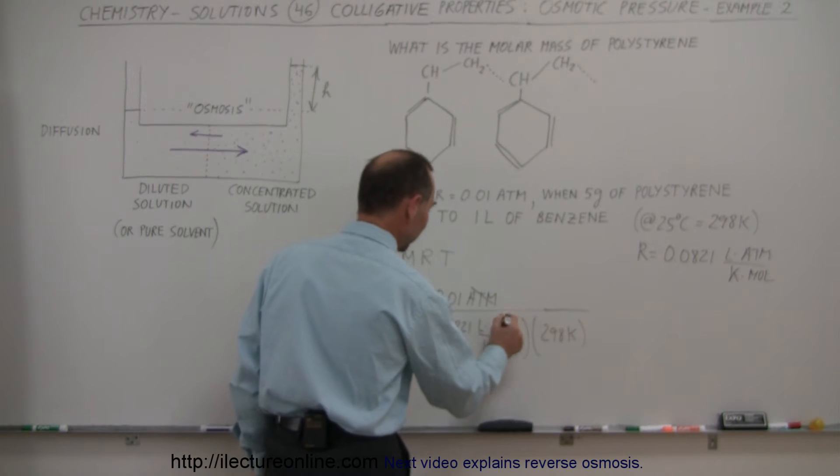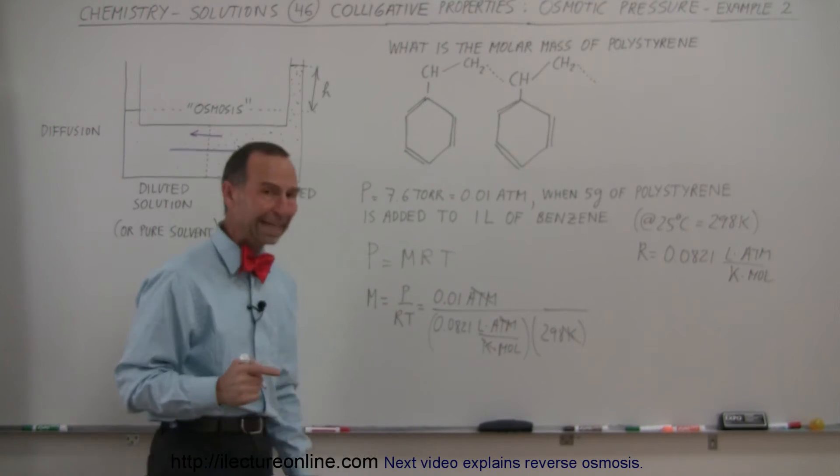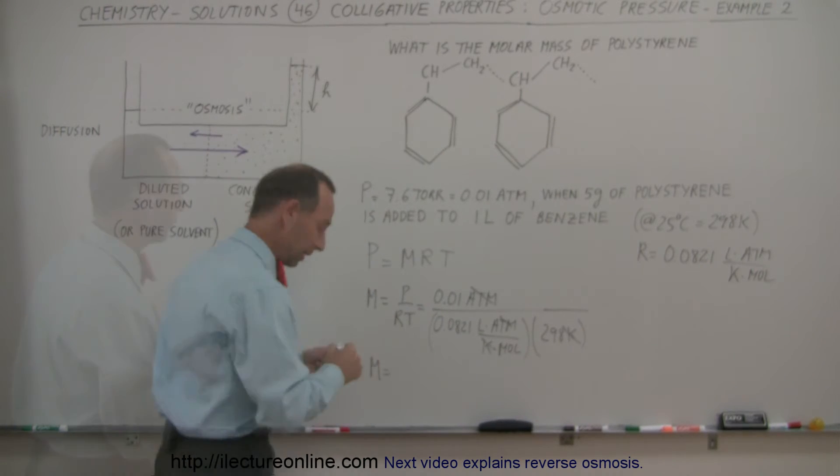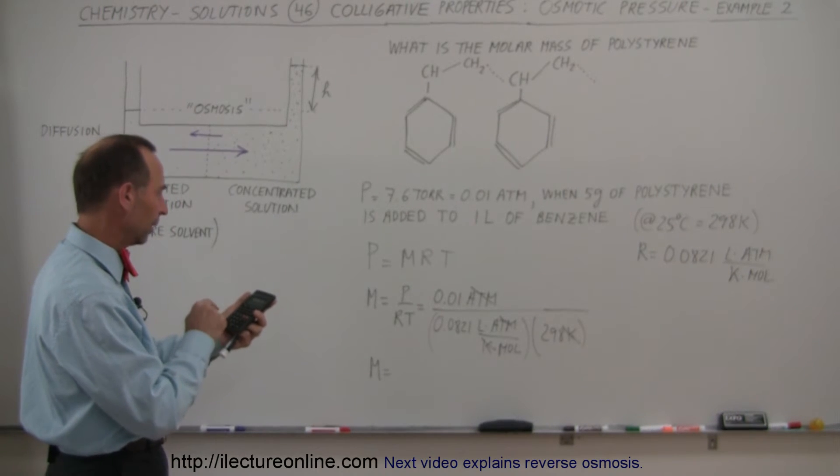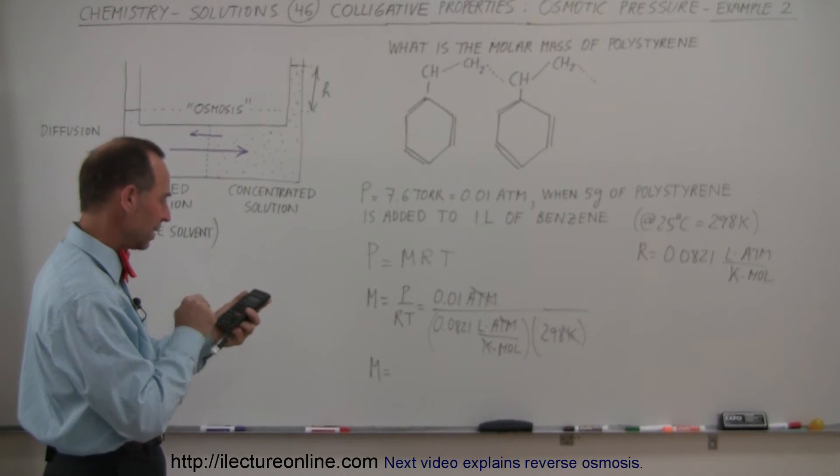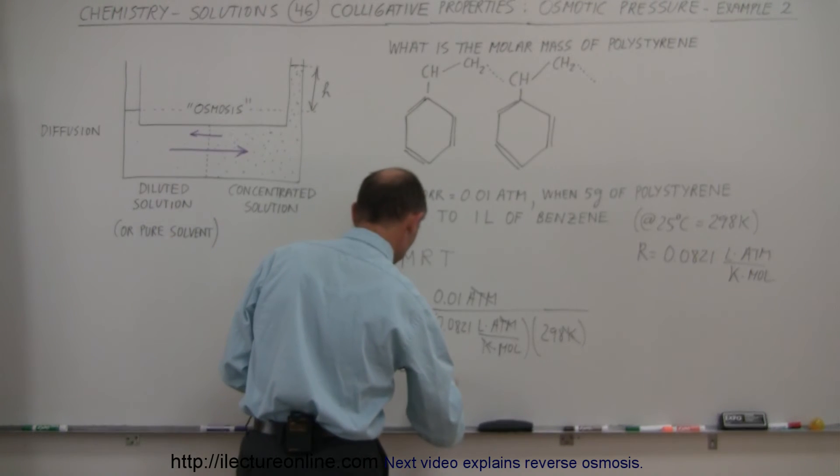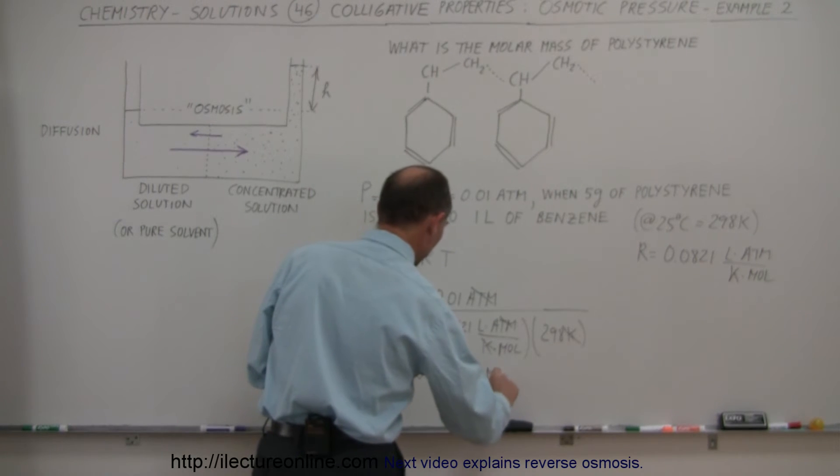So, now notice that the atmospheres cancel out. The Kelvin cancels out. We're left with liters over moles in the denominator, which is moles per liter. And number-wise, for that, we need a calculator. Yes, 0.01 divided by 0.0821 and divided by 298 equals, and we're left with 4.09, 4.09 times 10 to minus 4, that would be moles per liters.